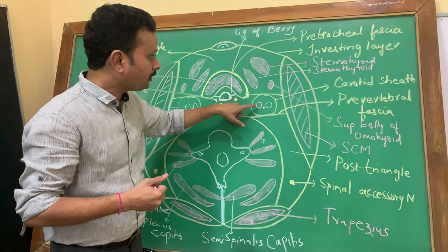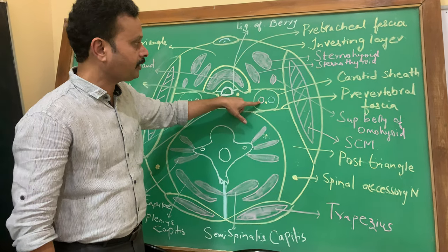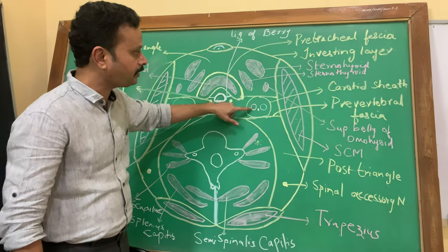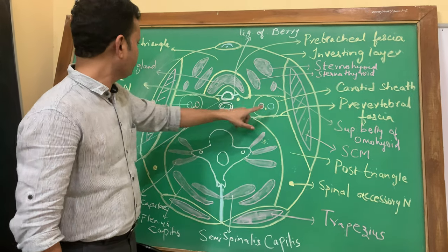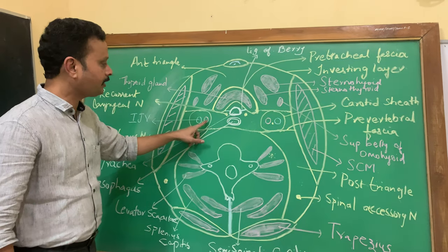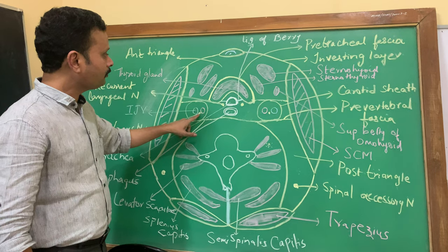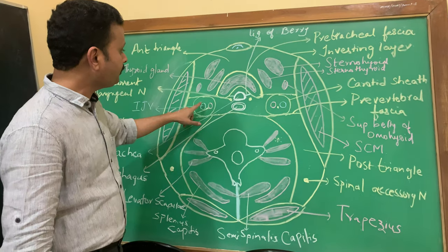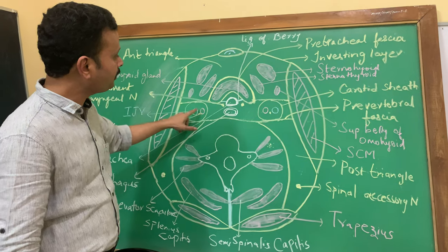It contains medially the common carotid artery in the lower part, and the internal carotid artery in the upper part of the neck. Laterally it is the internal jugular vein. And in between the two lies the tenth cranial nerve, that is the vagus nerve, lying posteriorly between the two.